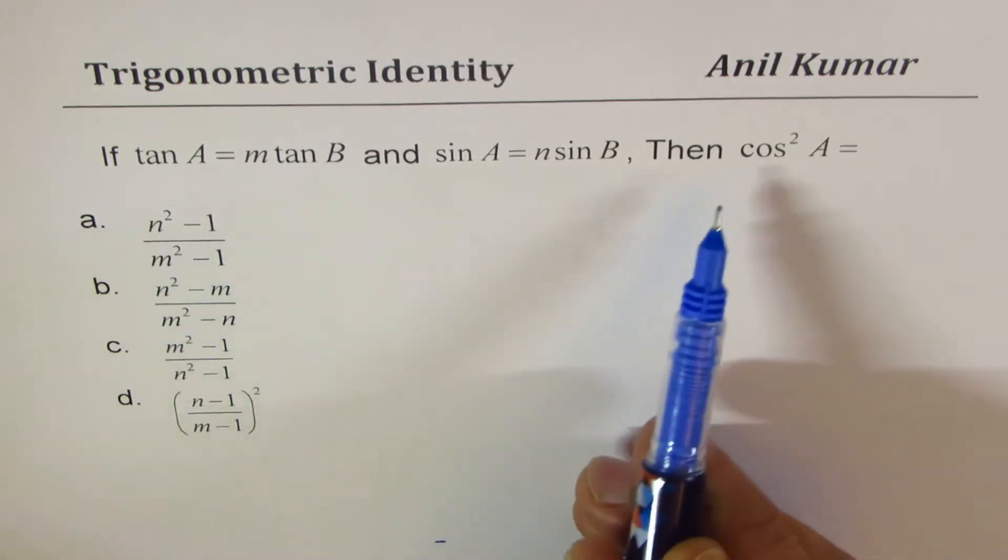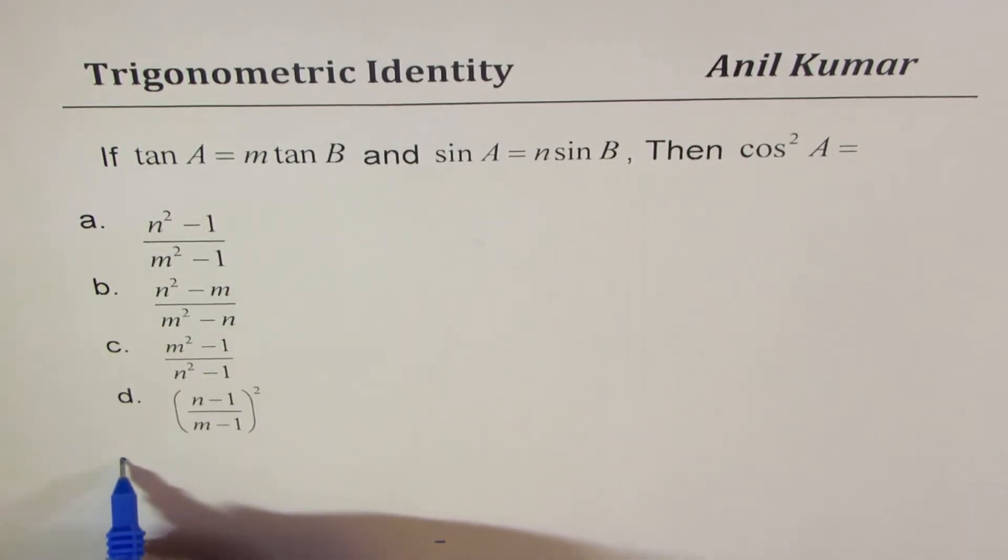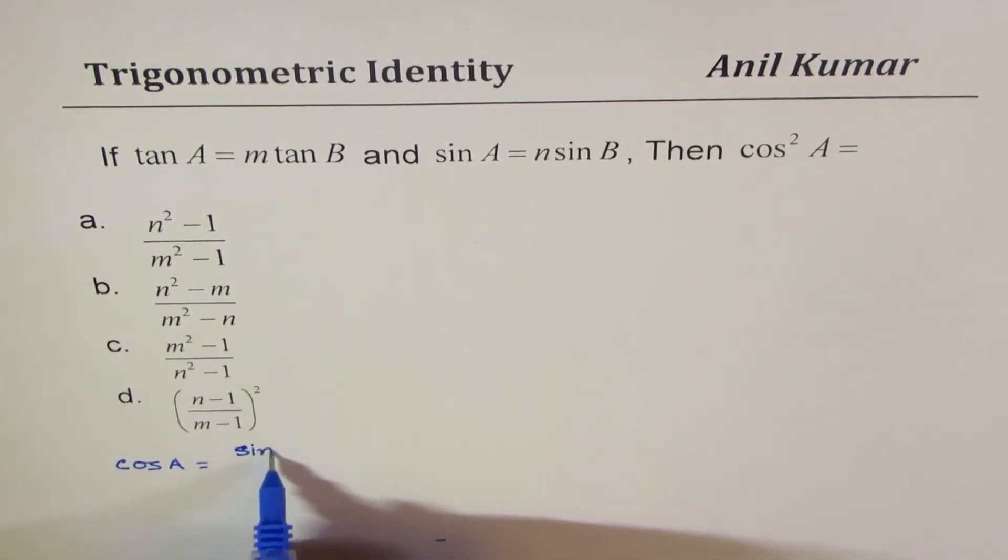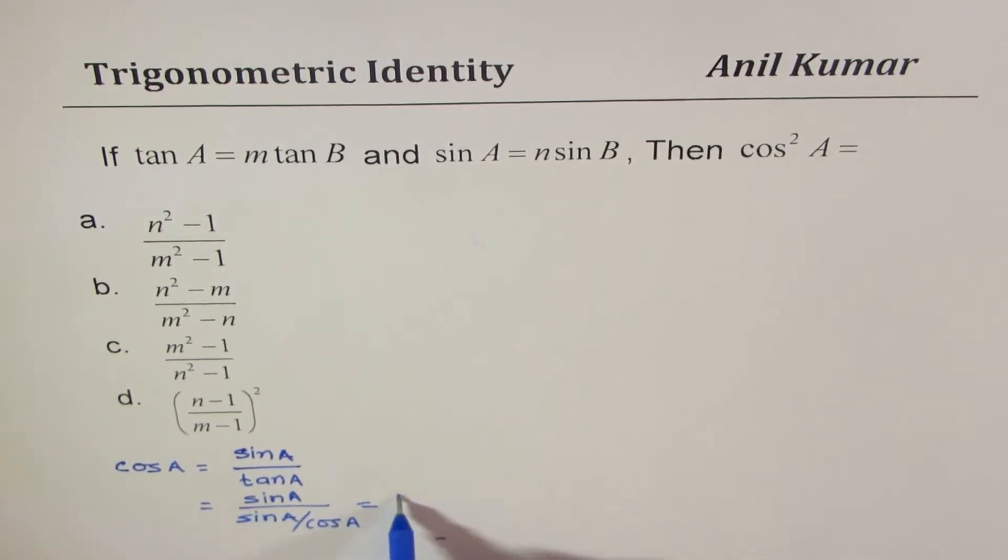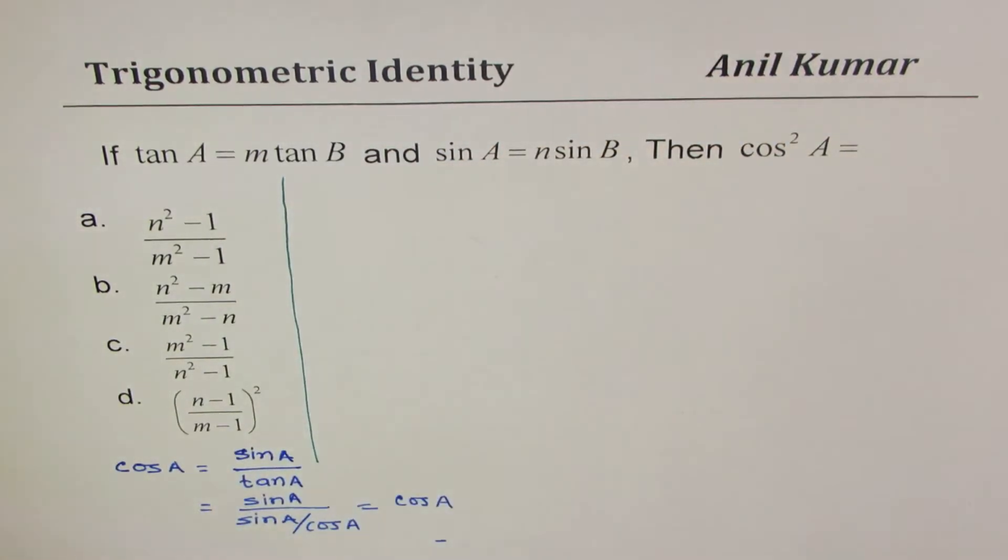Now, let us try to understand what is cos in terms of sin and tan. You will know that cos of A could be written as sin A over tan A. This is important to understand because tan A is sin over cos. It's like sin A over sin A over cos A. So sin and sin cancels and you get cos A. So we understand that cos A is the ratio of sin and tan. That should help us to get closer to the result.